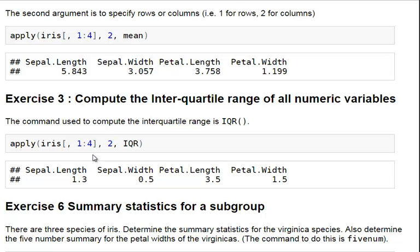So, apply, and essentially what we're doing is for all the numeric variables. So, it's the, we're working along the columns, one to four, and again, two for columns. And we are going to just ask for the interquartile range of the columns of iris, when iris is just one to four. There we have it there. Sepal length, sepal width, petal length, petal width.